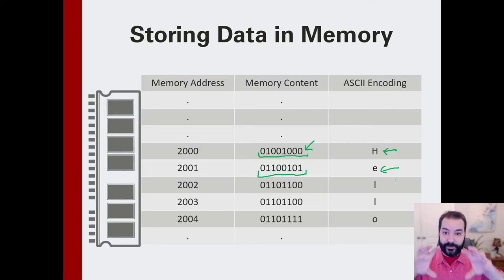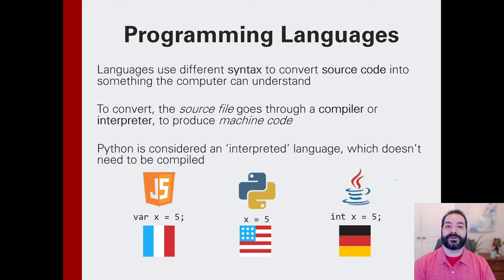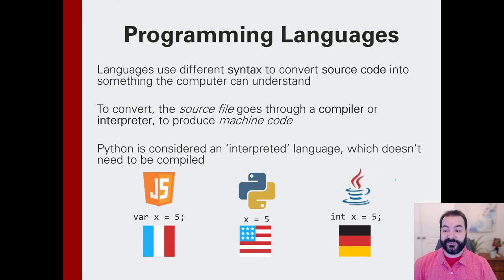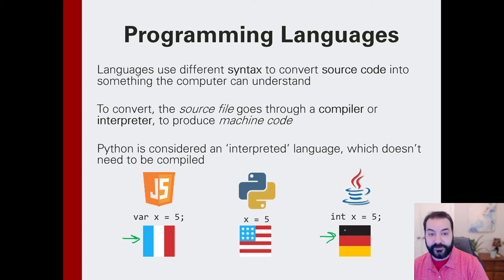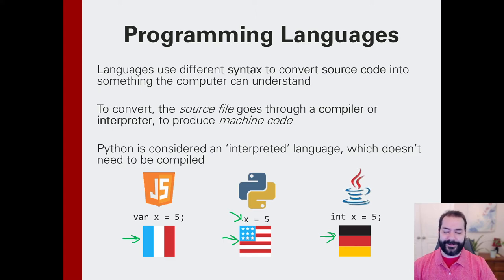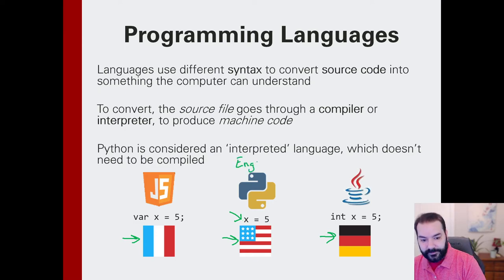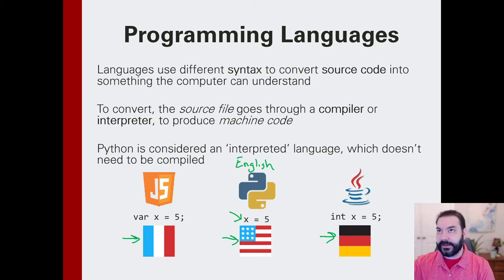It is through this representation of data that we get into the idea of a programming language. The best way to describe it: it's no different than how we have different languages for different countries. I'm using Python here — Python is our English, but there are other languages out there such as Java. Think about it like English to Spanish for a moment.